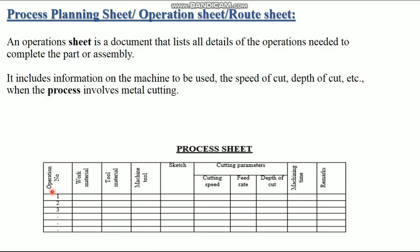The process planning sheet includes: operation number, work material, tool material, machine tool, sketch, cutting speed, feed rate, depth of cut, and machining time. All the data about the product and processes will be available in this process planning sheet.